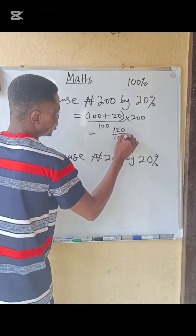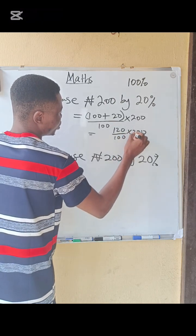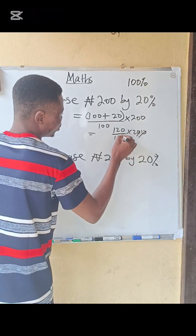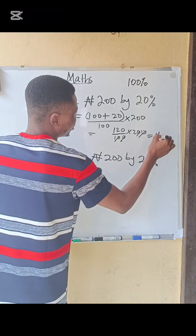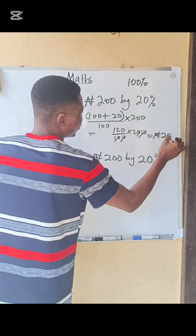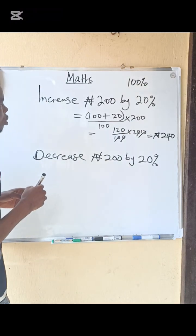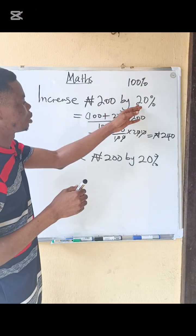So zero, zero, zero, zero, zero. You now leave it 120 times 2. That will give you 240. So when you increase 200 by 20%, the answer is 240.